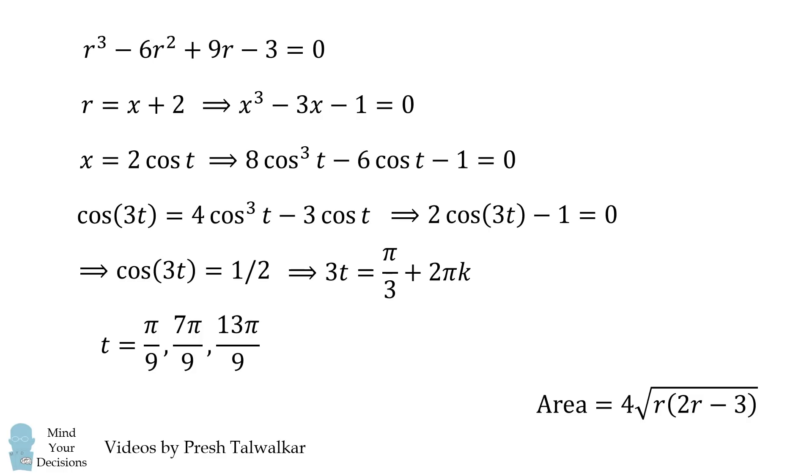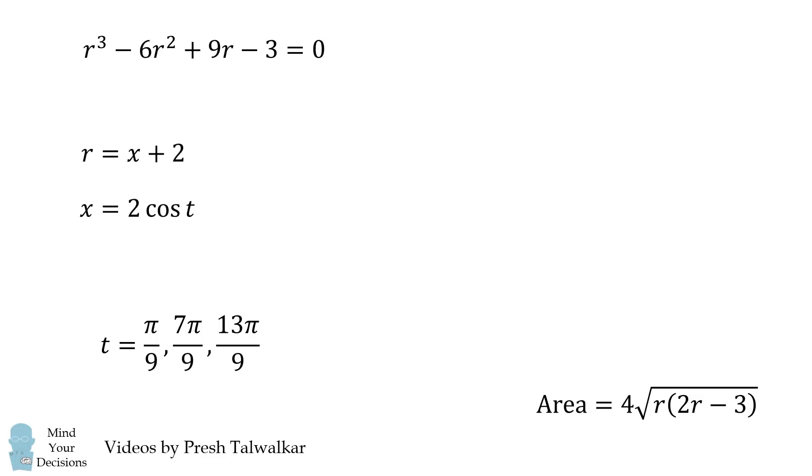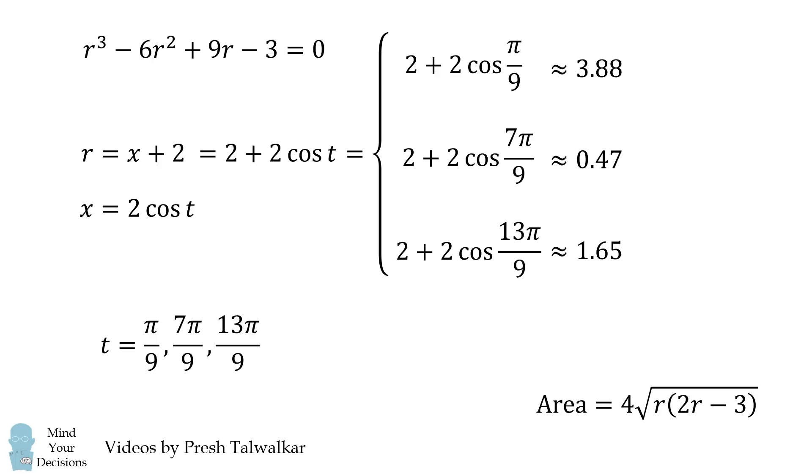We want to take exactly 3 of them because we have a cubic equation. So t can either be equal to pi over 9, 7 pi over 9, or 13 pi over 9. Let's evaluate each value of t. Since R is equal to x plus 2 and x is equal to 2 cosine of t, R is equal to 2 plus 2 cosine of t. We thus have the 3 possibilities for the value of R, and we get the following approximate values.